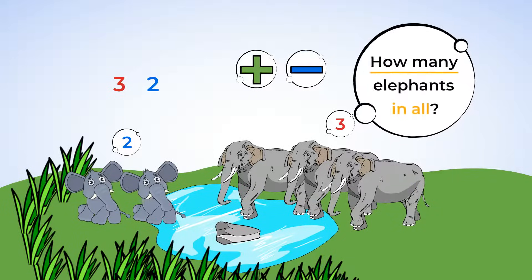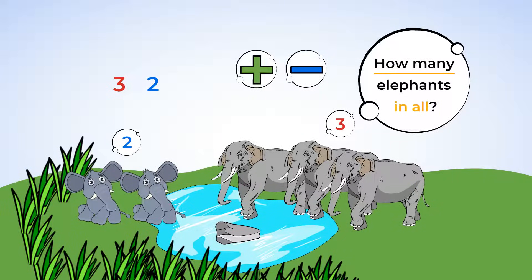Let's take another look at the problem. The problem says, in all. That's a clue that we need to add. And here, we have three elephants and two more elephants. Altogether, it will be a bigger number. That's right. We need to add. High five. So, we can write a plus sign here. We are solving three plus two.